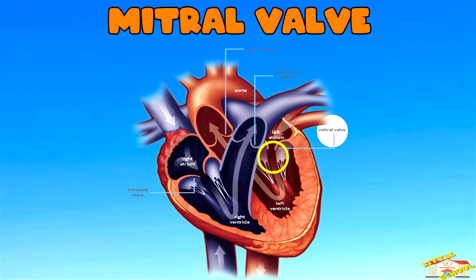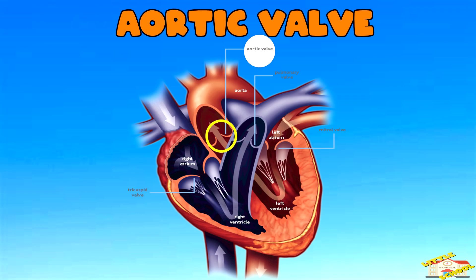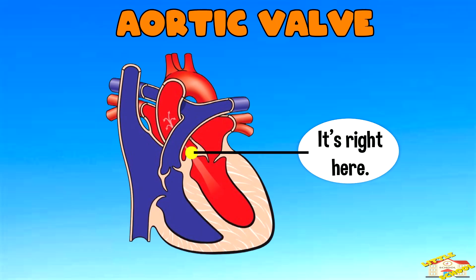Mitral valve: the mitral valve prevents blood from flowing back into the left atrium when the left ventricle contracts. Aortic valve: the aortic valve prevents blood from flowing back into the left ventricle from the aorta.